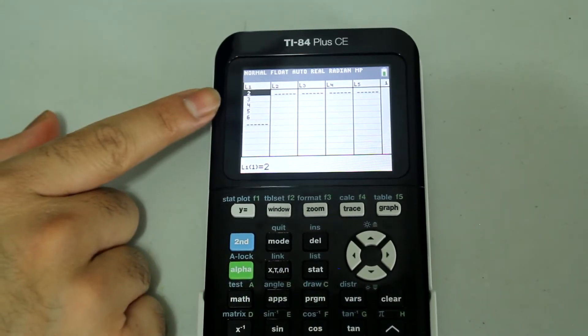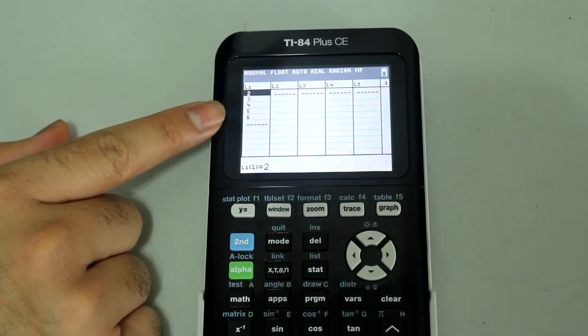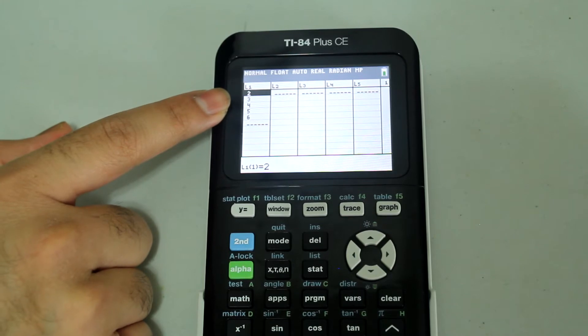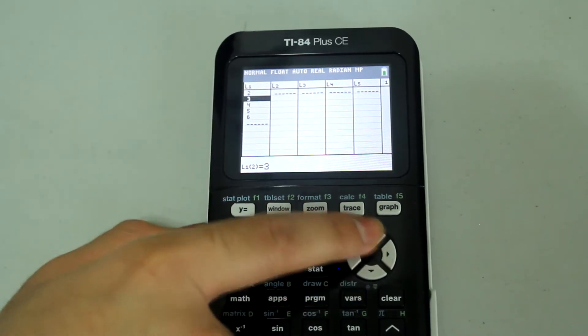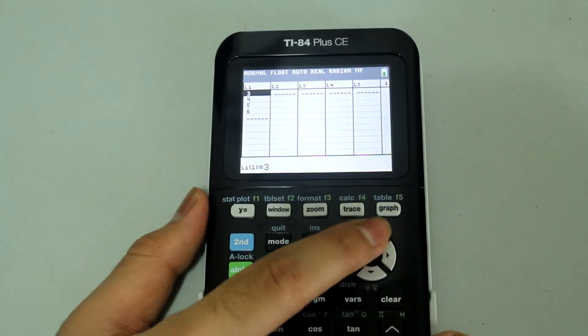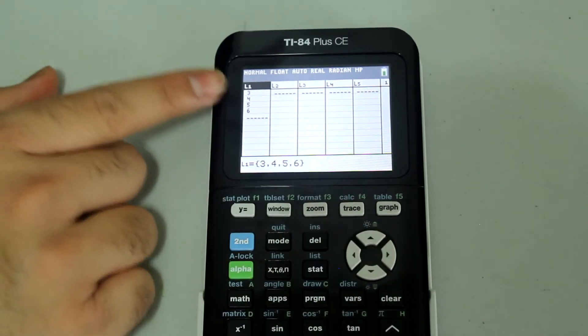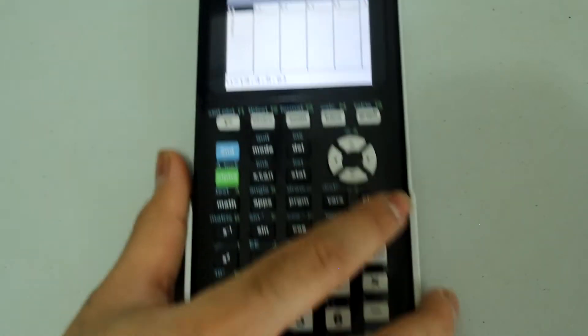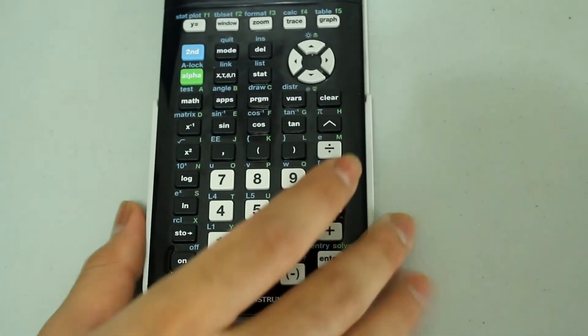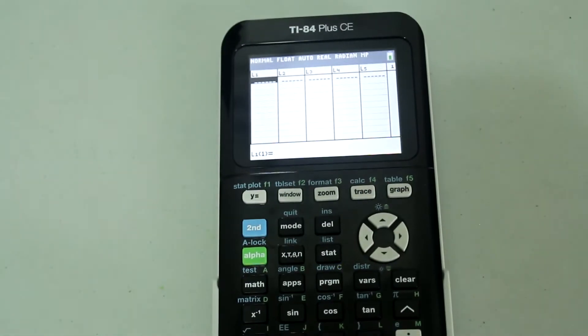If there are existing entries that you want to clear, if you want to delete one particular entry, just have the cursor over that entry and press delete. If you want to clear an entire list, arrow over to the title of the list and just press clear, then press enter, and the entire list will be cleared.